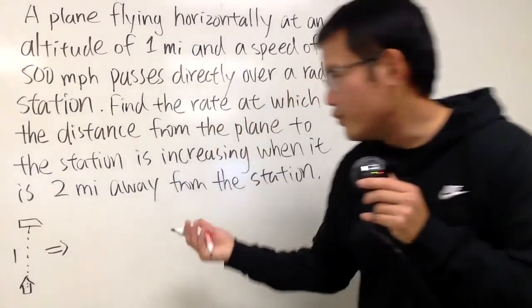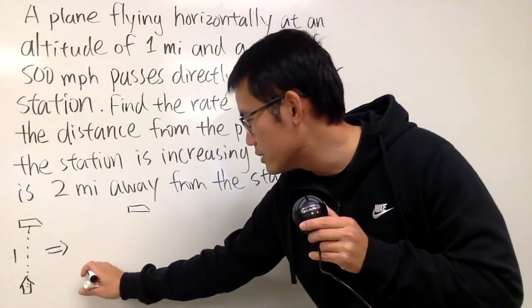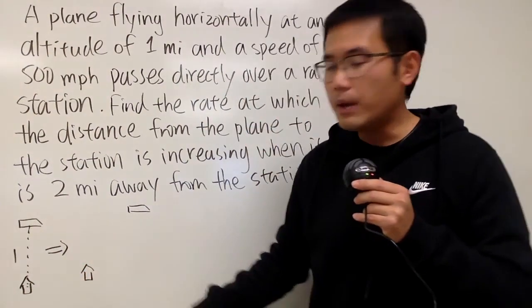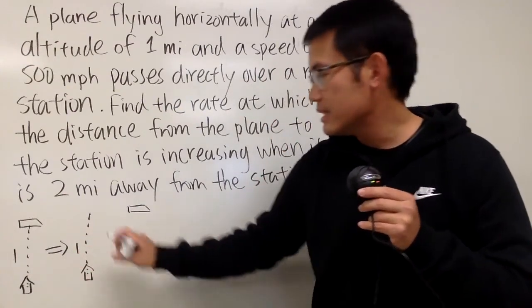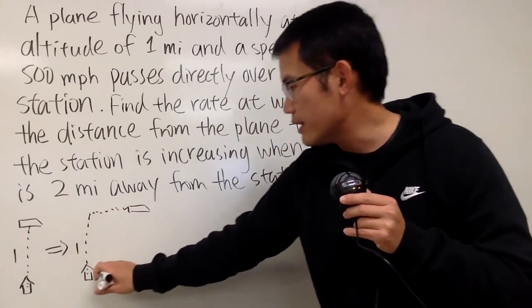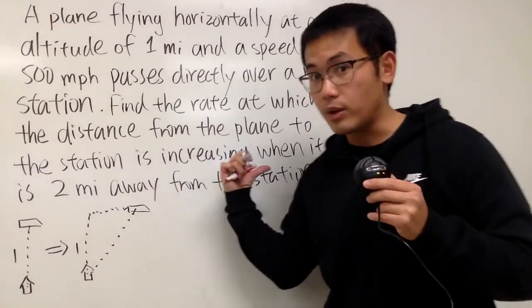After a few moments, we know that the plane will end up right here, but the station is still going to be right here. We know this distance will still be equal to 1, but this distance is going to change, and likewise this distance is going to change as well, because the plane is flying horizontally.